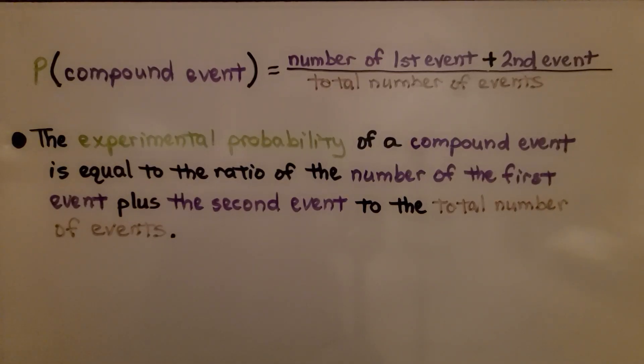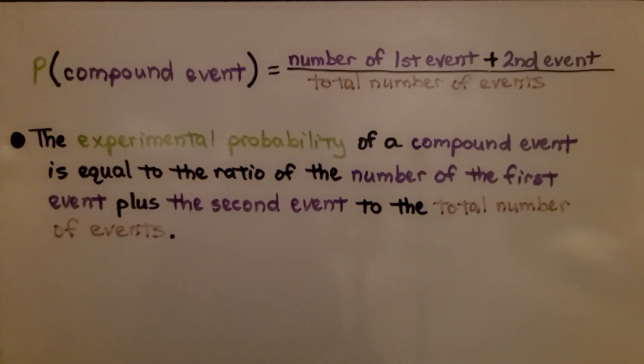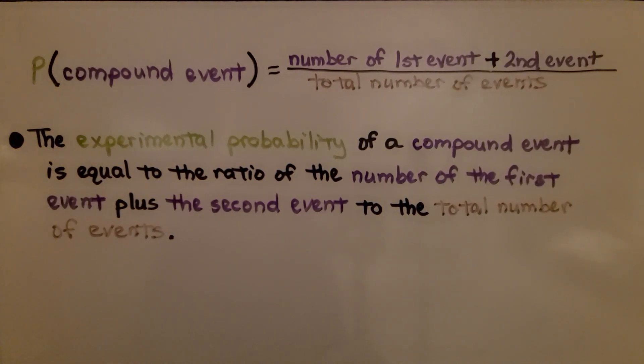The experimental probability of a compound event is equal to the ratio of the number of the first event plus the second event to the total number of events.